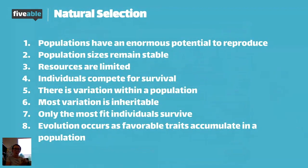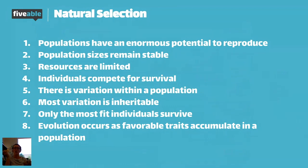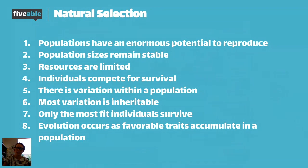There are eight things that need to be true for natural selection to occur. I'm going to run through them because it's really important that you're familiar with these in order to understand how natural selection is actually occurring. First and foremost, populations have to have an enormous potential to reproduce. If populations are not reproducing, they're not going to be evolving and natural selection will not be occurring.